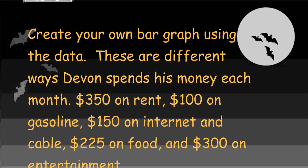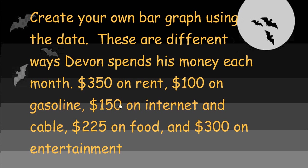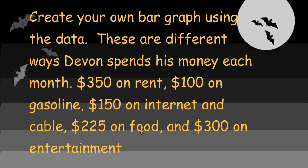Now it's time for you to create your own bar graph using the data. These are the different ways that Devin spends his money each month: $350 on rent, $100 on gasoline, $150 on internet and cable, $225 on food, and $300 on entertainment. Go ahead, pause the screen and create your own bar graph. Think very carefully about your interval. You probably don't want to use one, or even fives. Ten might even be too small. Discuss it with a partner and make your own bar graph, then unpause the screen and we'll go over it.